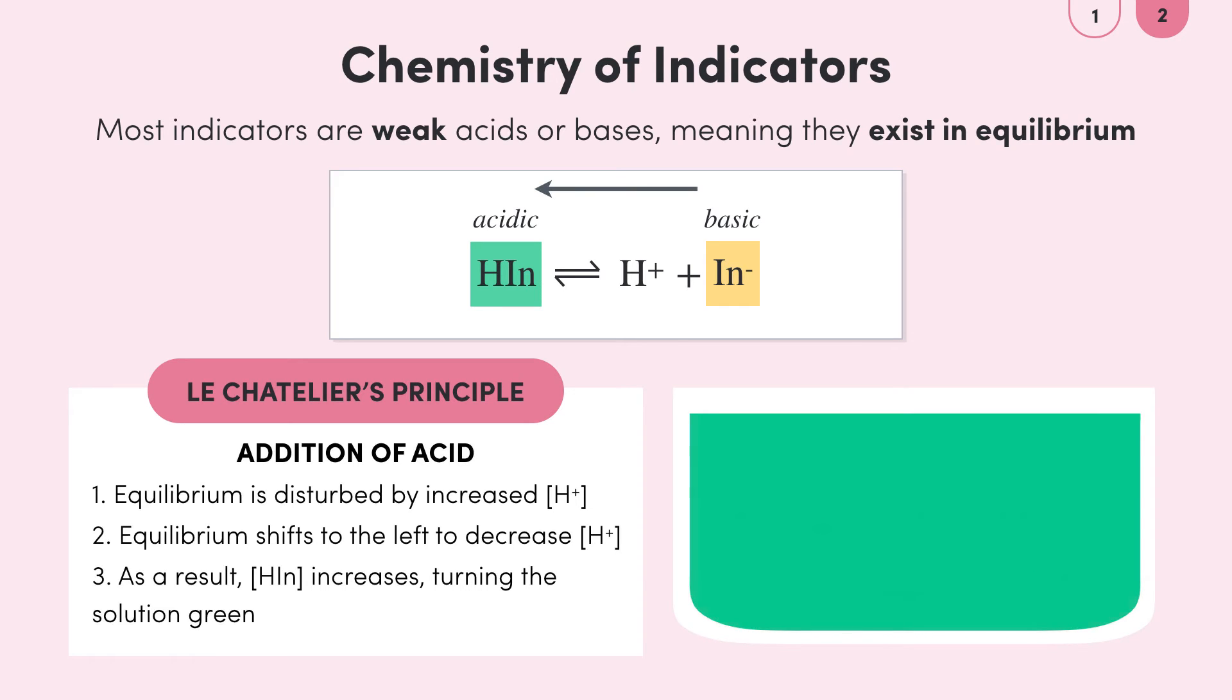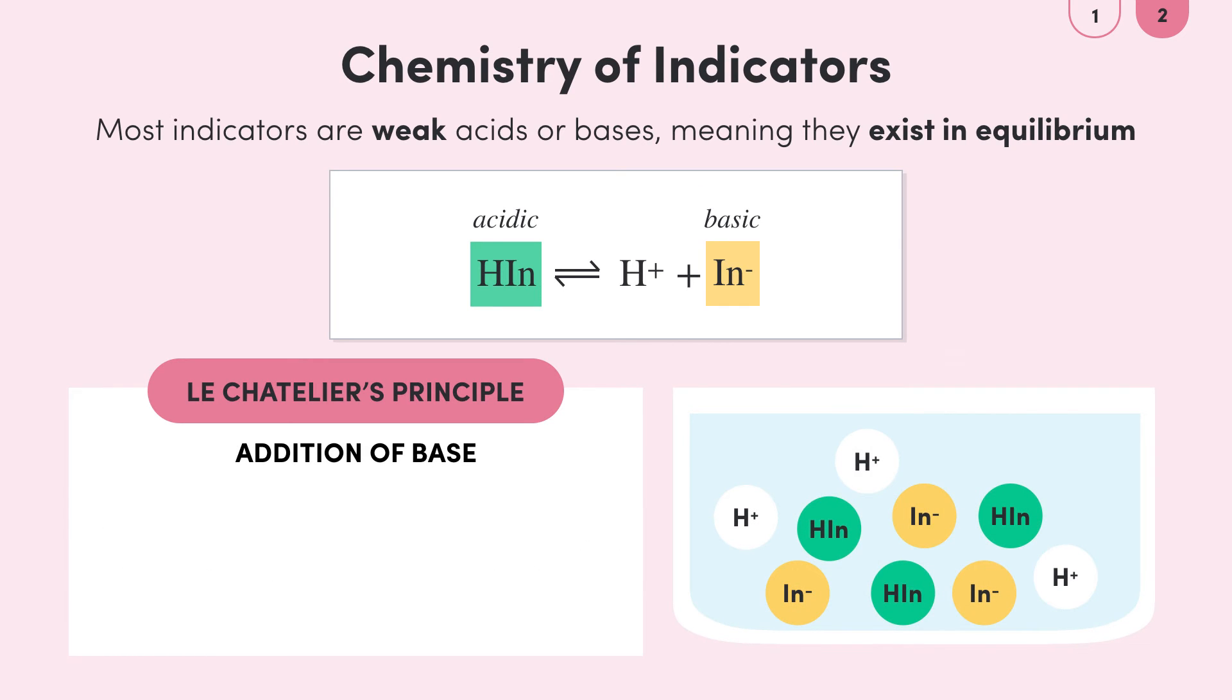But what about if we then added a base to this solution? Well adding a base would disturb the equilibrium by initially decreasing the concentration of hydrogen ions because the hydroxide ions from the base would react with the hydrogen ions to form water.